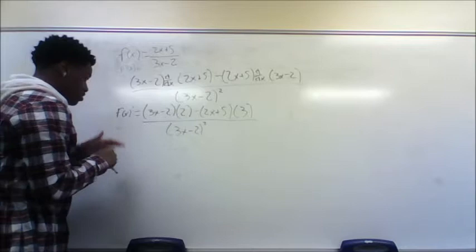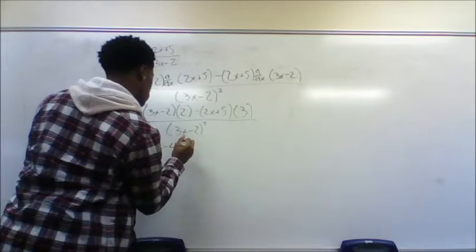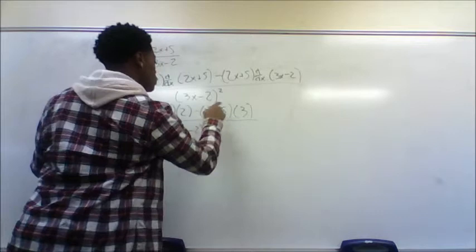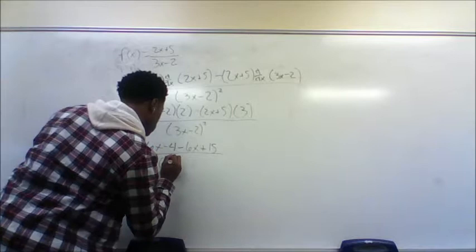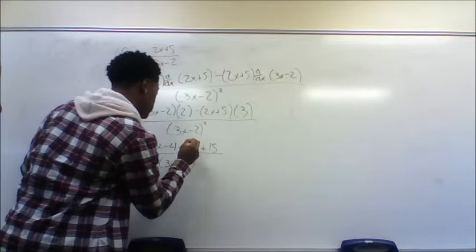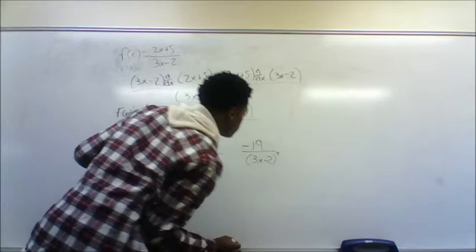So I take my 3x minus 2 times 2, which gives 6x minus 4, then subtract 2x plus 5 times 3, which gives negative 6x plus 15, all over 3x minus 2 squared. Now, 6x and negative 6x cancel out, and we're left with negative 19 over 3x minus 2 squared. That will be our final answer for this problem.